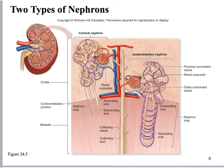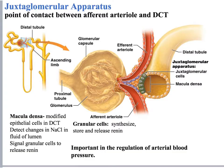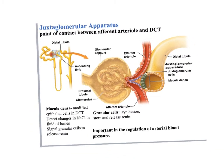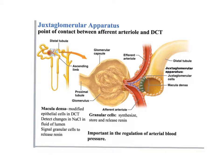Notice that the distal convoluted tubule runs back around near the glomerulus. This is an important structure called the juxtaglomerular apparatus — a point of contact between the afferent arteriole and the distal convoluted tubule. It contains modified epithelial cells called the macula densa, which detect changes in sodium and chloride ion concentration in the fluid passing through.